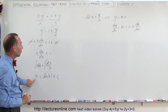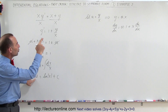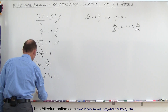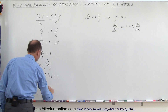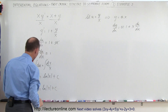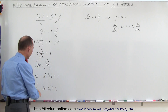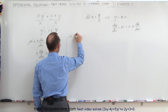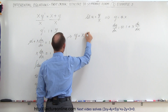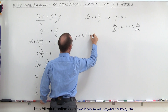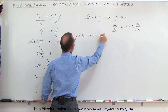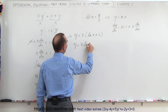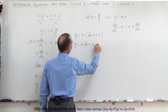Now we substitute back what we have for u — since u is y over x, we write y divided by x equals the natural log of x plus c. Taking the x and putting it on the left side, we get y equals x times the natural log of x plus a constant of integration. This can also be written as y equals x times the natural log of x plus x times c.